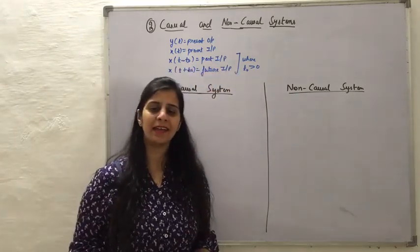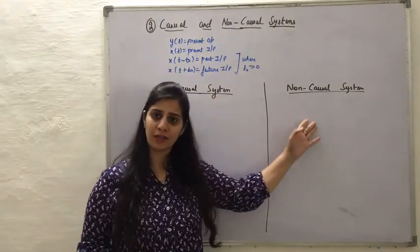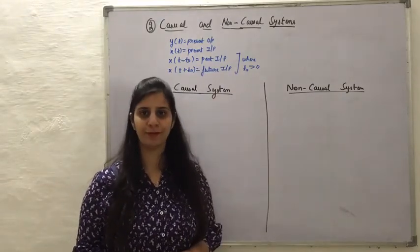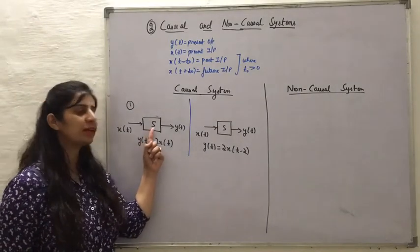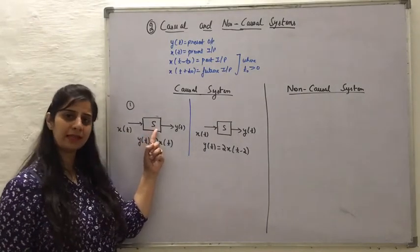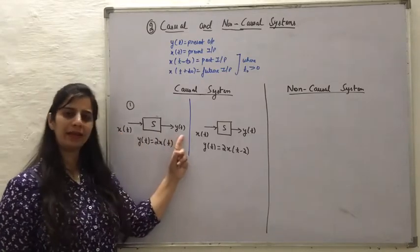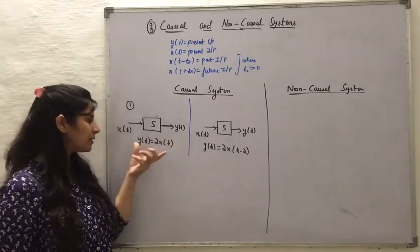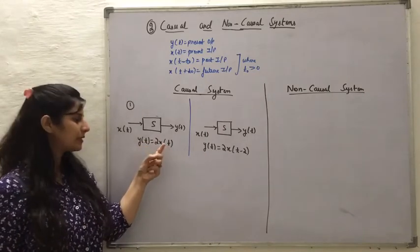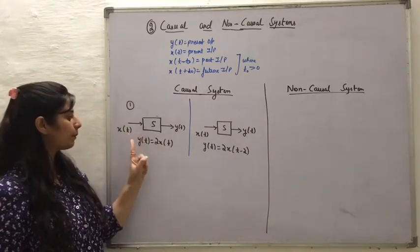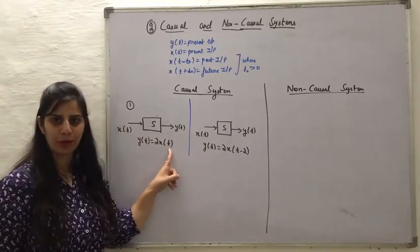For a better understanding, I am differentiating between causal and non-causal systems in a tabular form. For the first point of differentiation, I am considering a system S that takes x(t) as the input and y(t) as the output, and this is how the input and the output are related. We can see in this equation that the present output value is related to the present input value.